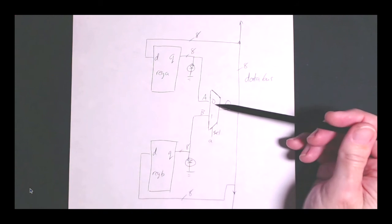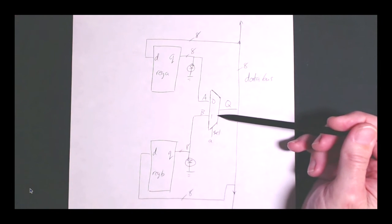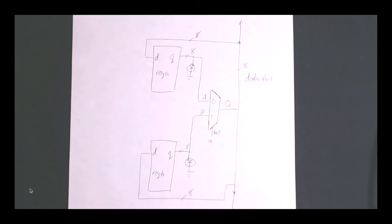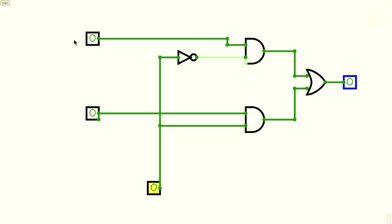But what does this multiplexer look like? This is the output from register A. That's what this first signal is. This is the output from register B. And this is the select signal.